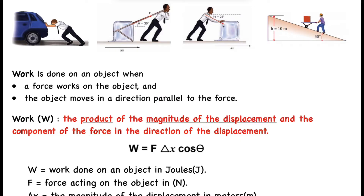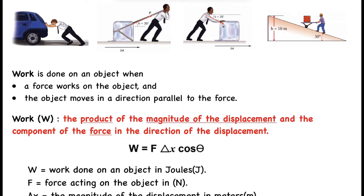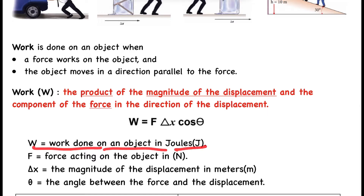Now let's come to the definition, which is very important. Work involves force and displacement, but there's another thing that's important: the angle — the direction. Work is the product of the magnitude of displacement and the component of the force in the direction of the displacement. So: W = F·Δx·cosθ. The cosθ represents the direction of the force relative to the displacement. Work is measured in joules.